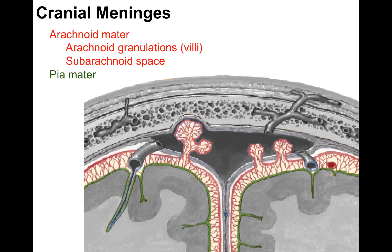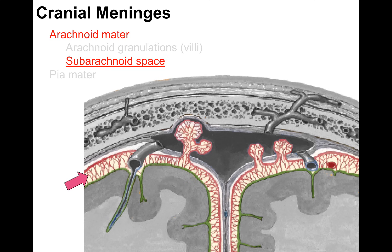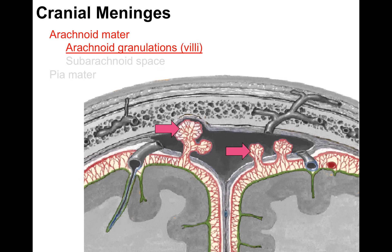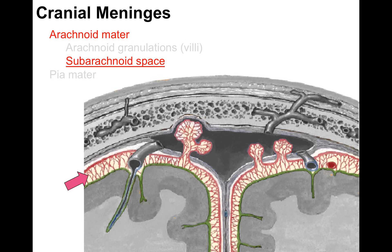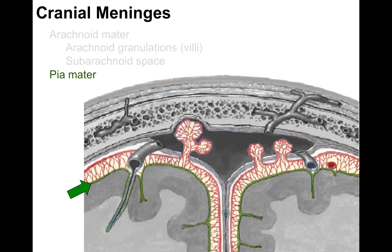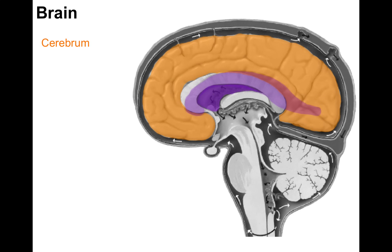The arachnoid mater has arachnoid granulations that protrude into the superior sagittal sinus; this is significant because CSF flows from the subarachnoid space through those granulations into the dural venous sinuses. The subarachnoid space is where CSF flows around the brain and spinal cord and also houses arteries and veins. The pia mater is the most delicate meninx, intimately connected to the brain's gray matter and diving down into the sulci with the blood vessels.